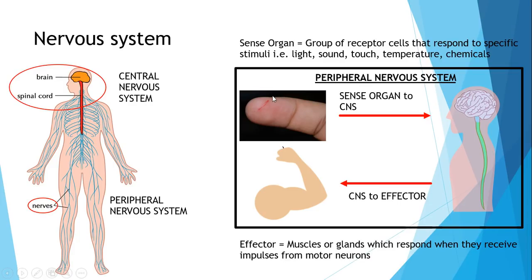So what exactly is the nervous system? It's comprised of two main parts: the central nervous system and the peripheral nervous system. The central nervous system is made up of the brain and the spinal cord, but most importantly the brain. And you've got the peripheral nervous system, which basically is a set of nerves that connect the brain to the rest of the body.